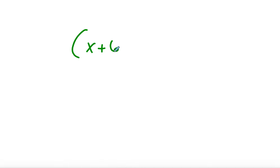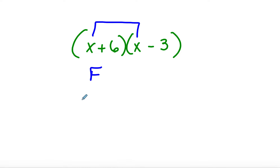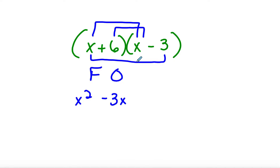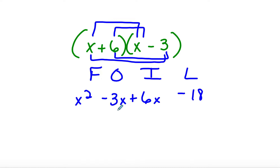Let's do one more: (x + 6)(x − 3). First times first is x times x = x². Outer times outer gives −3x. Inner times inner gives + 6x. Last times last gives −18. Adding these together, we get x² + 3x − 18.